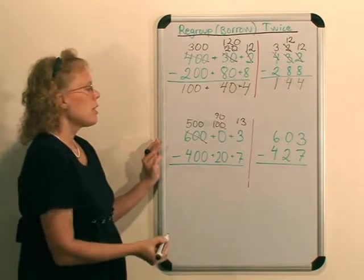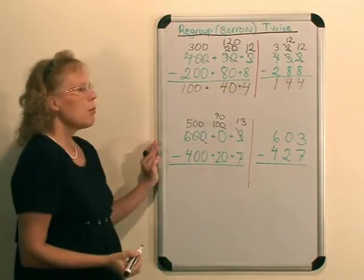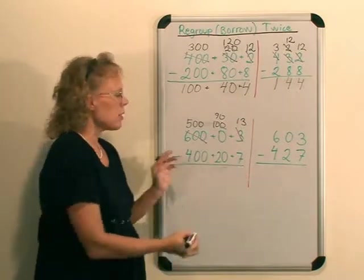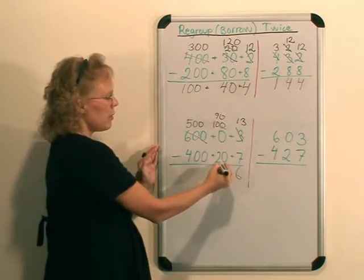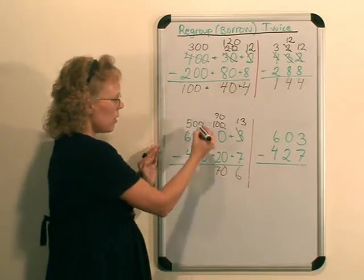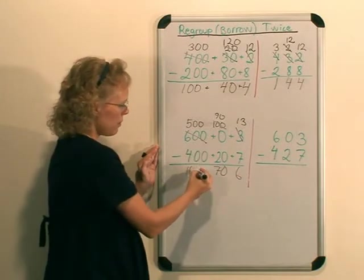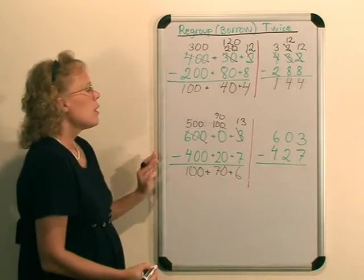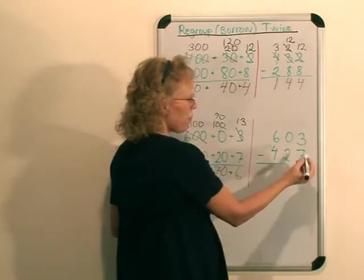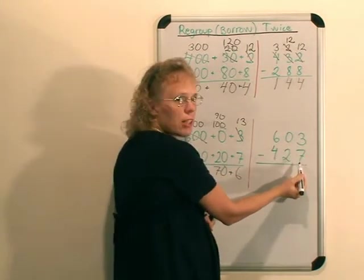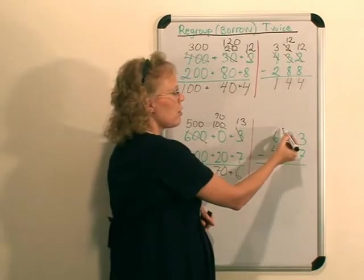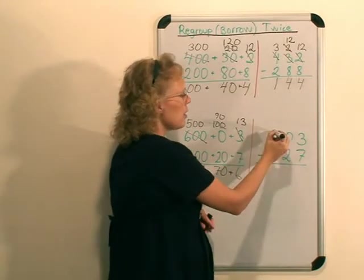Now from the 100 we take 10, leaving of course 90, and then here is the 10 and the 3, so that's 13. And now we can subtract: 13 minus 7 is 6, 90 minus 20 is 70, and 500 minus 400 is 100.